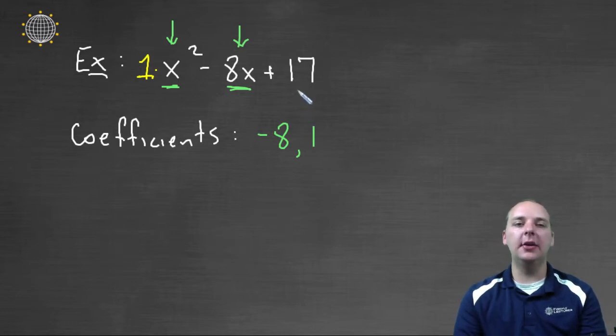Now seventeen, we're not going to consider him to be a coefficient of a variable, because there's not a variable attached to seventeen. We would call seventeen a constant, but not a coefficient of some particular variable. So here's the coefficients for this expression here.